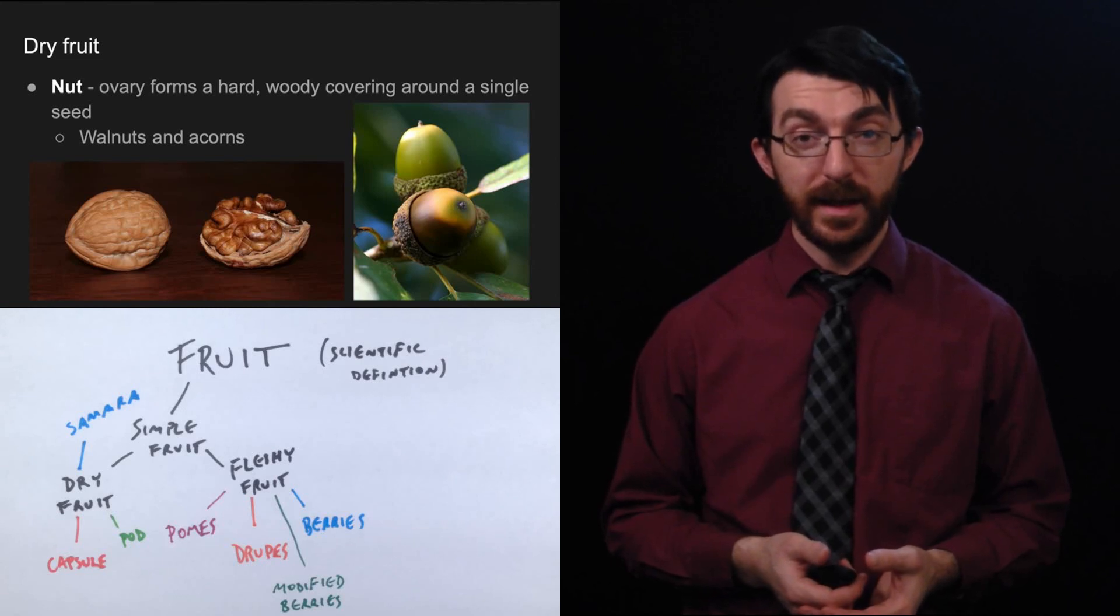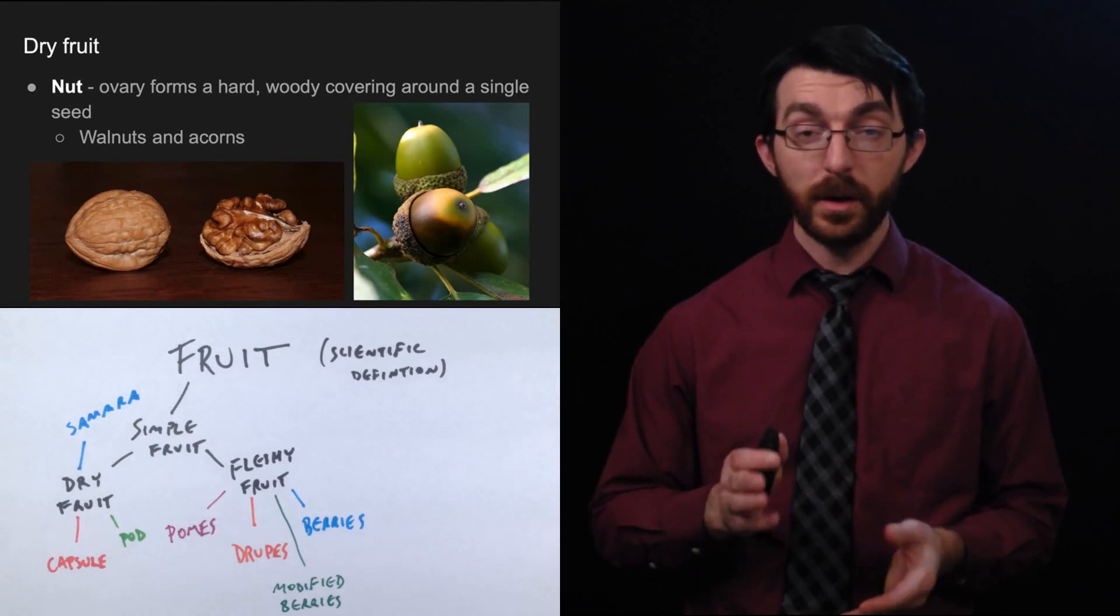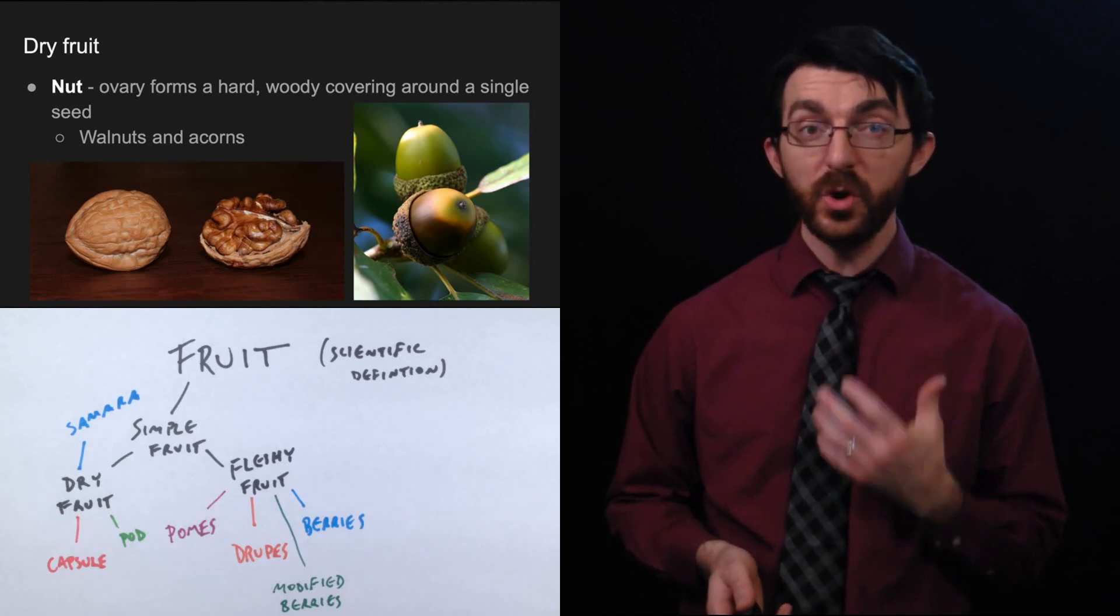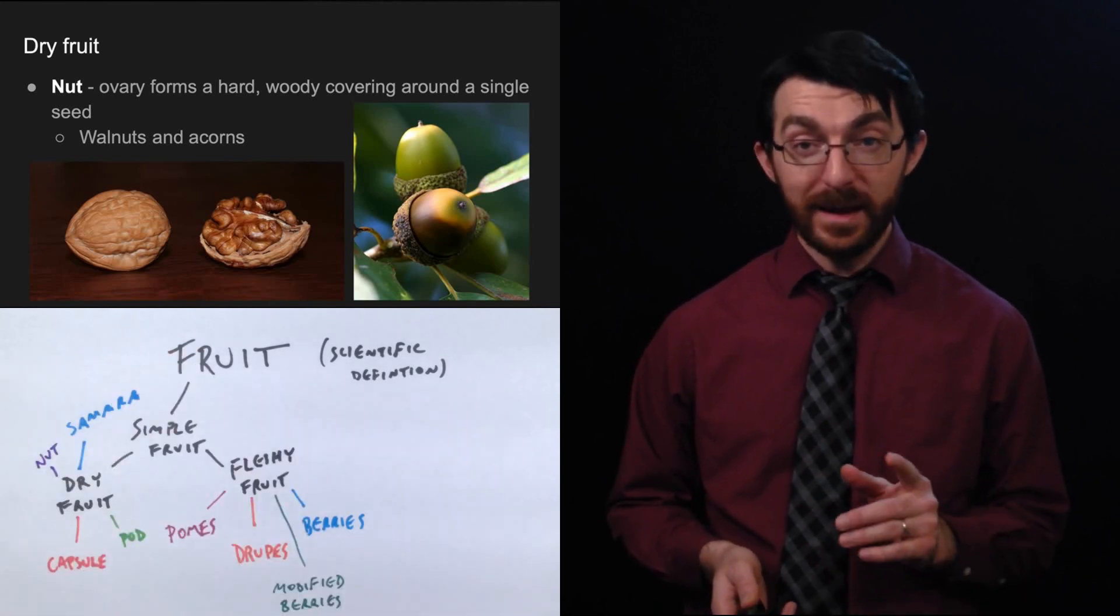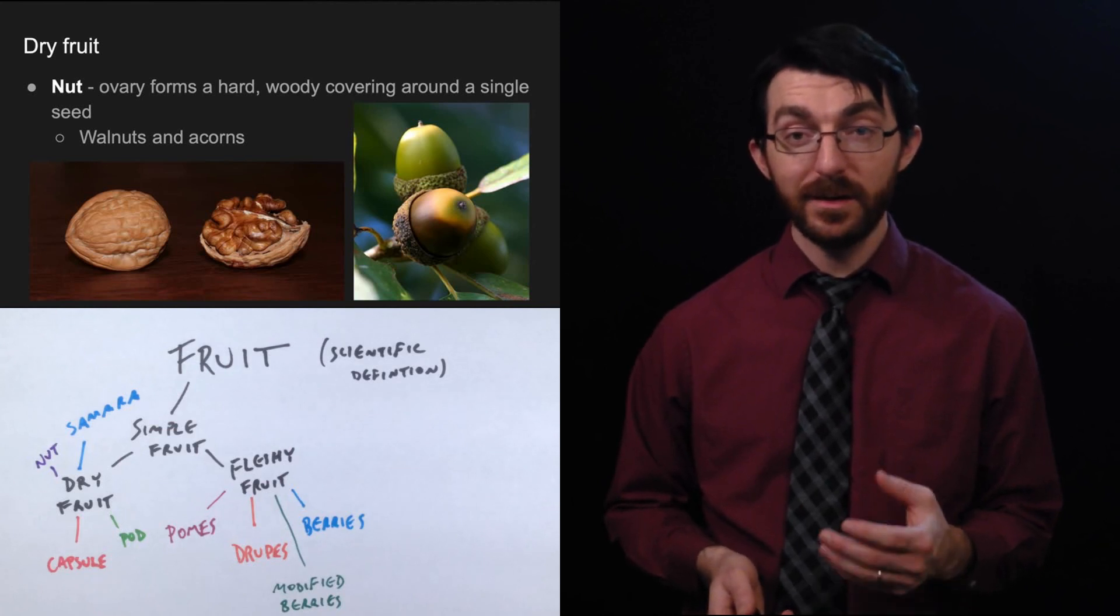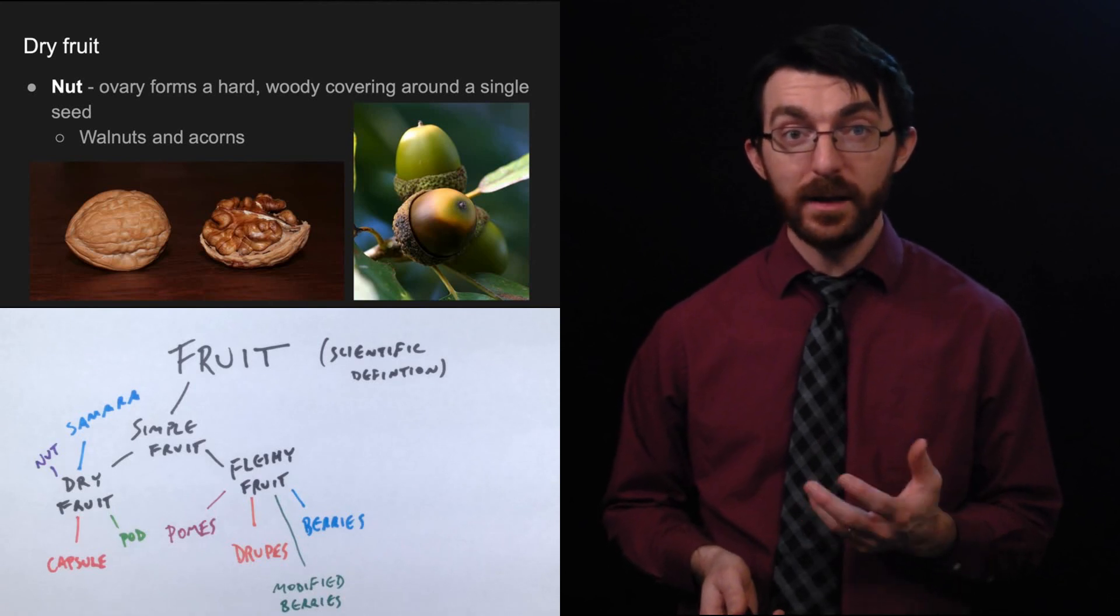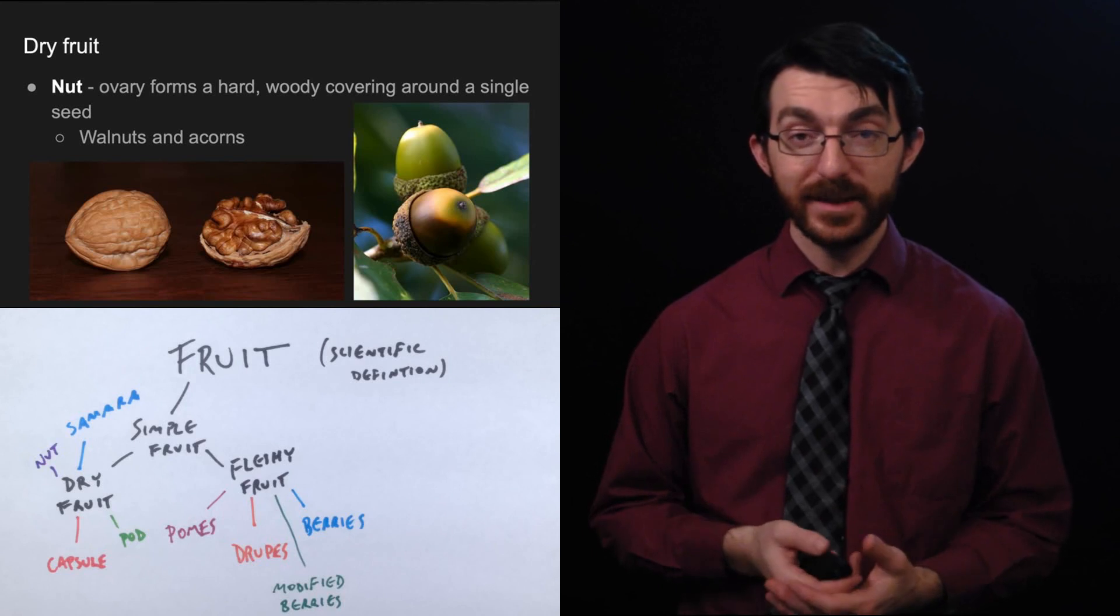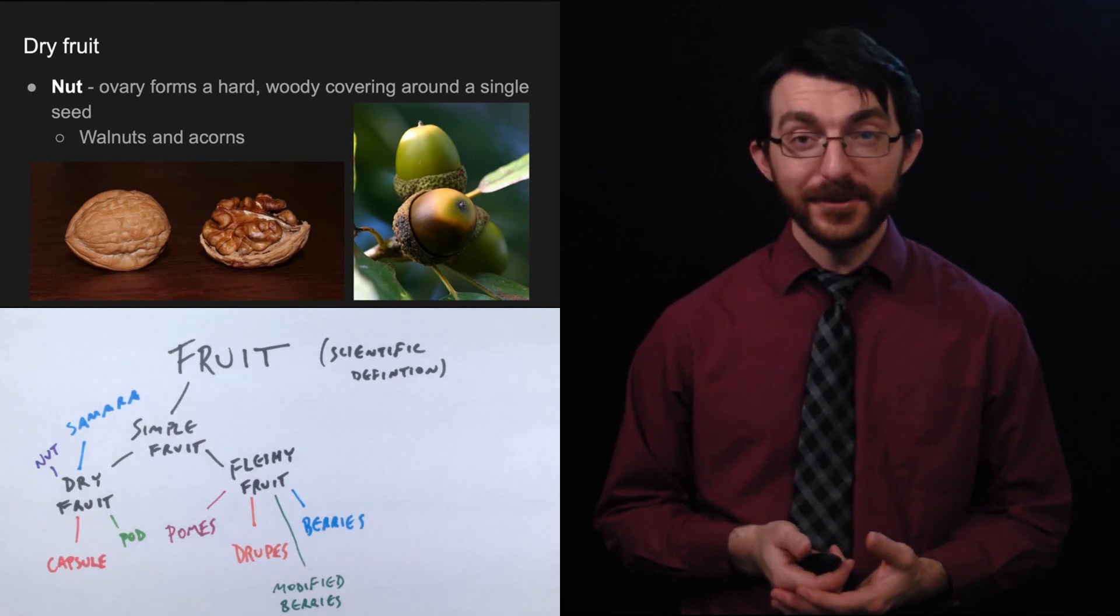Especially this next one. I might want to eat a walnut, but I don't want to eat an acorn. These are nuts. That is a category of dry fruit in which the ovary forms a hard woody covering around a single seed. Now, remember peanuts, peanuts not in this category, peanuts aren't even nuts. They grow in a pod. That plant doesn't form a woody covering around a single seed.